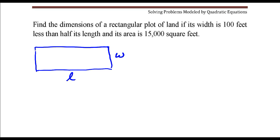Now the information given in this problem is that the width is 100 feet less than half its length, length divided by 2 minus 100. That would represent the width.